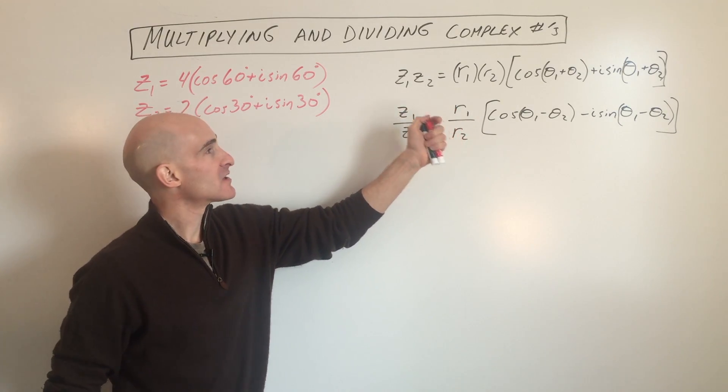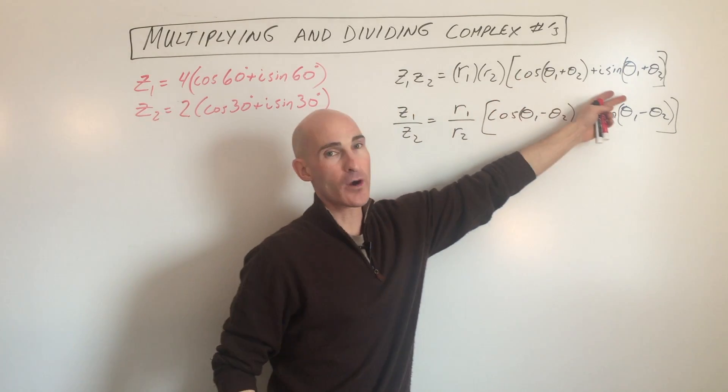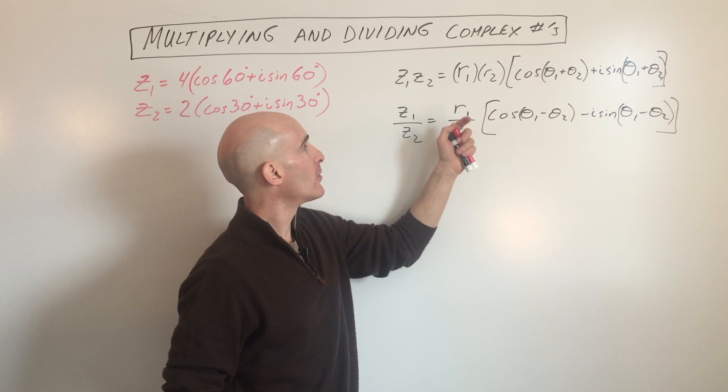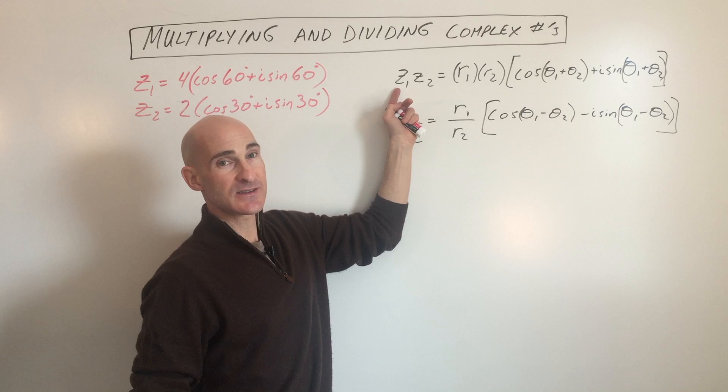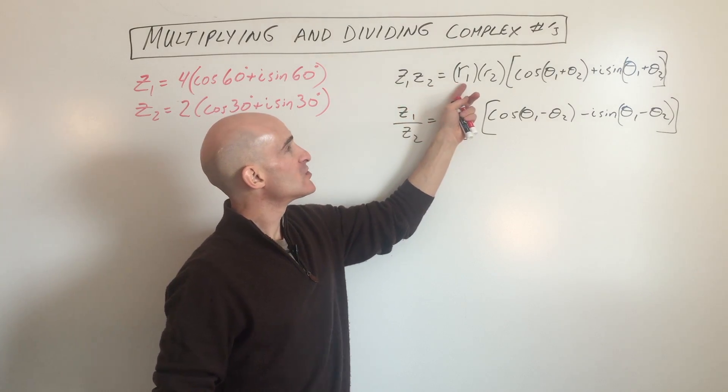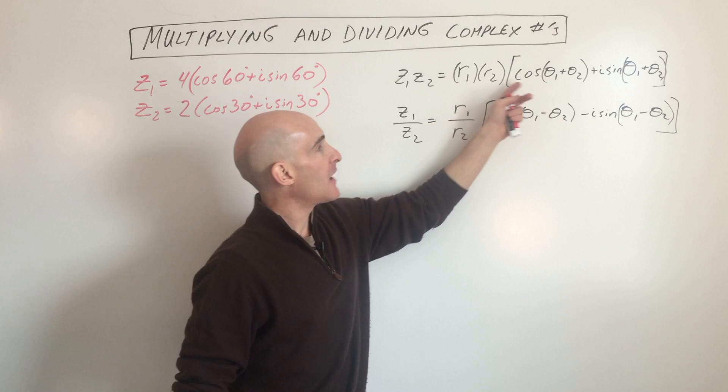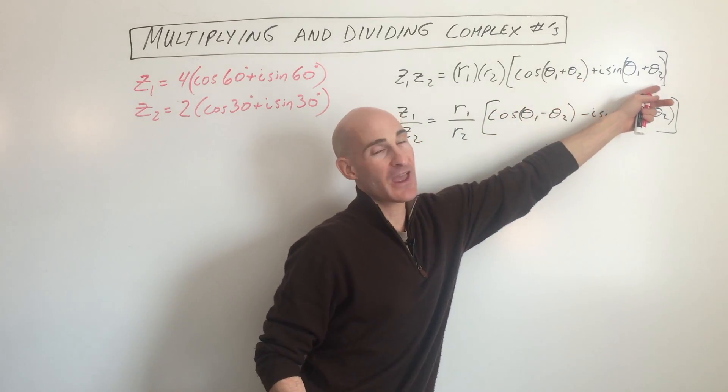What you want to do is put your complex numbers into the trigonometric form, which we talked about in a previous video. When you multiply the two complex numbers represented here by z1 and z2, you multiply the r values and you add the angles.